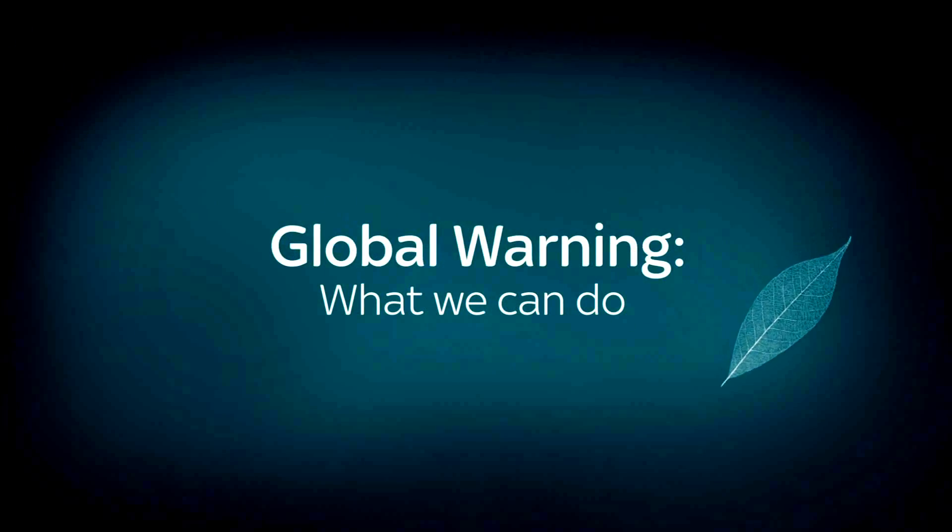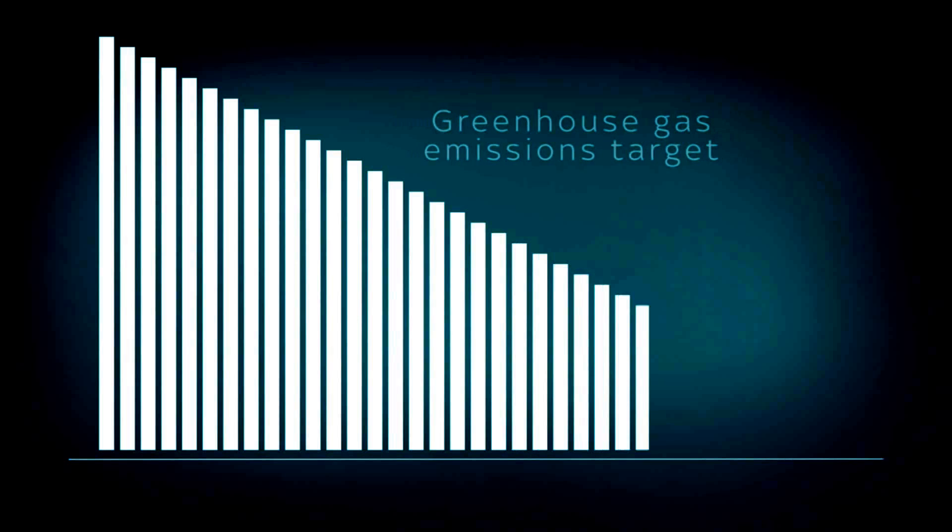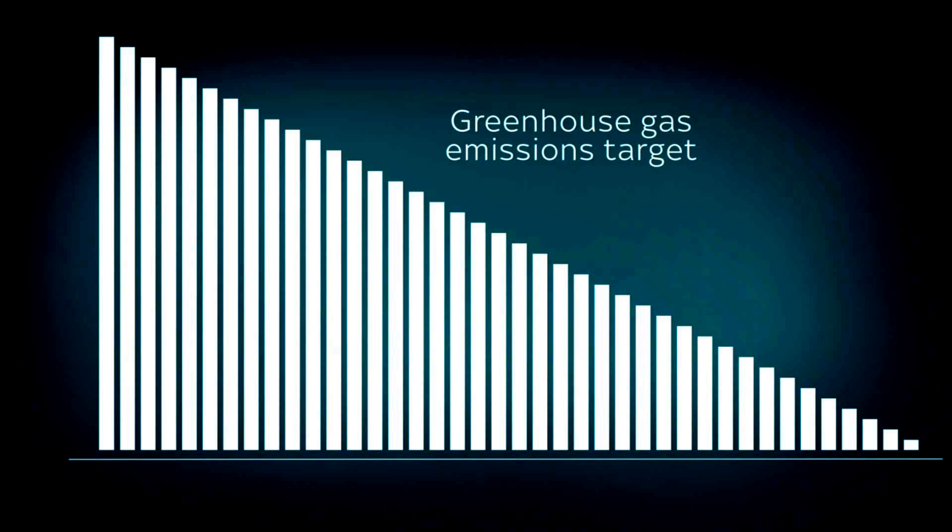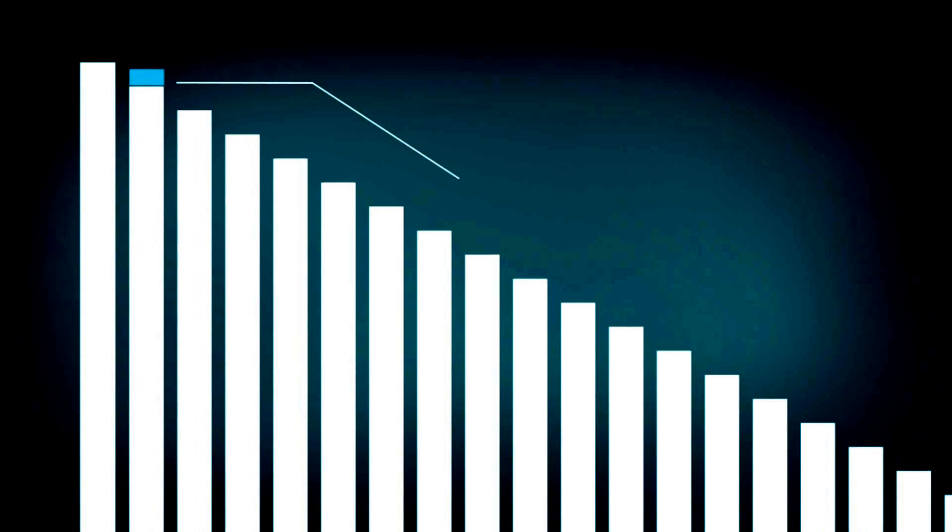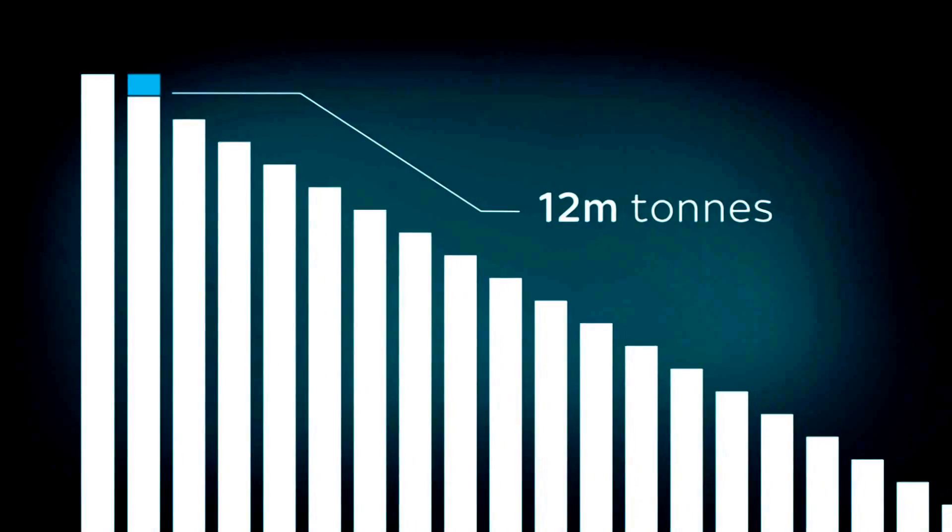To stop global temperatures rising by more than 2 degrees, greenhouse gas emissions need to fall by 2.5% every year until they reach zero. In the UK, that means cutting our emissions by 12 million tonnes in the first year. So what can we do?